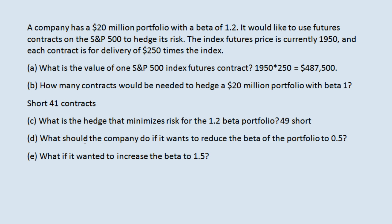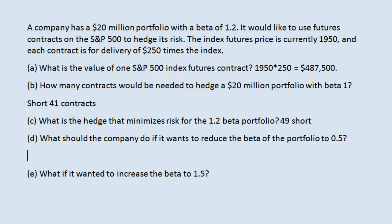Next, we have a different category of question. What if the company doesn't want to completely hedge the risk, but instead wants to reduce the portfolio beta to 0.5, meaning the portfolio would be only half as volatile as the market? We look at what we are trying to do to the beta: it's currently 1.2 and we want it to be 0.5 — that's a reduction of 0.7. So we want to reduce beta by 0.7.